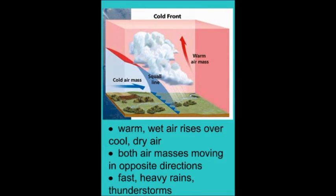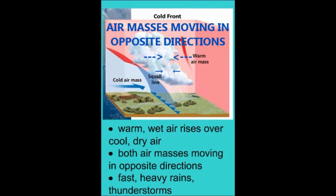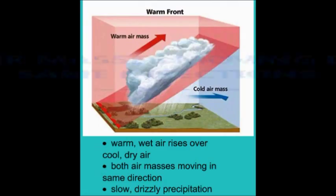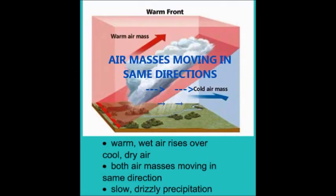Now, if that cold air mass and that warm air mass are moving in opposite direction, it is called a cold front, and that results in fast, heavy rain and thunderstorms, often violent weather.